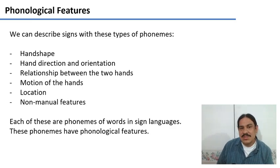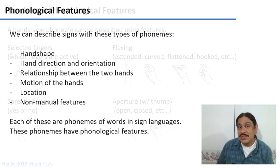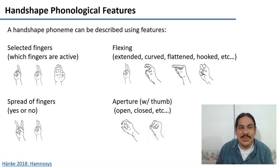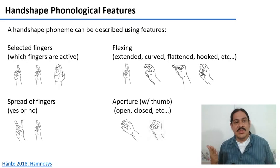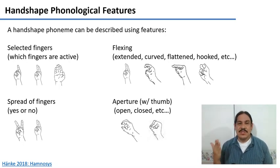And each of those phonemes is going to have phonological features, like we saw in spoken languages. So let's focus on hand shape, which is just one type of phoneme. As you can see here, we can use several features to describe hand shapes.